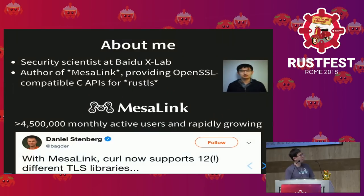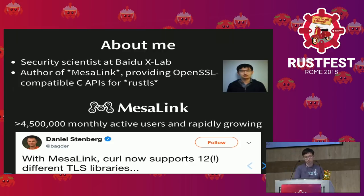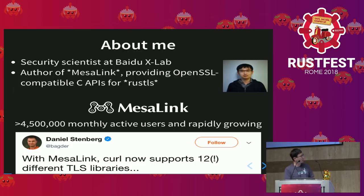My name is Yimin Jing. I'm a security scientist and engineer at Baidu XLab. I'm also the author of Mesalink. Mesalink is a TLS library providing OpenSSL-compatible C APIs for Rust TLS — RustSource. With Mesalink, we can bring Rust into many places where OpenSSL and C users dominate, for example Android. At Baidu, we have deployed Mesalink in our applications running on Android-powered smart TVs. Mesalink has accumulated about more than 4.5 million monthly active users.